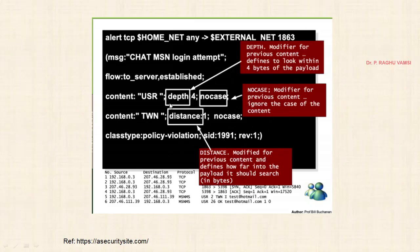We have seen the msg field, flow (to server, established), content, and content types such as GET, HTTP, or user type. In HTTP transmission the content could be a GET or POST message; in FTP it is an FTP type. Here the content type is USR, which is used in MSN chat. MSN chat uses port 1863 for communication and has flags like USR and TWN, similar to GET and POST in HTTP.